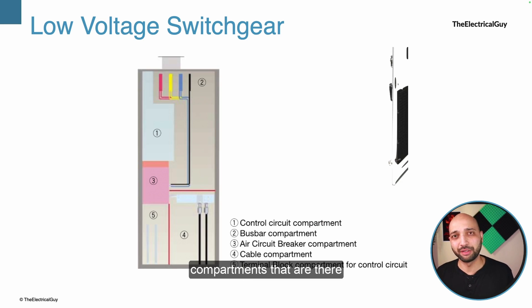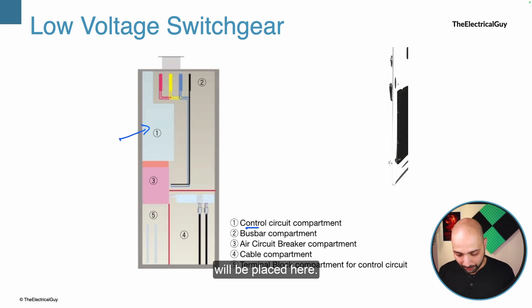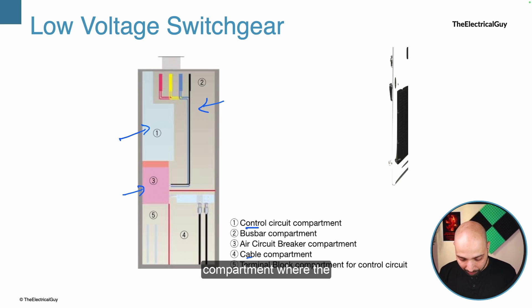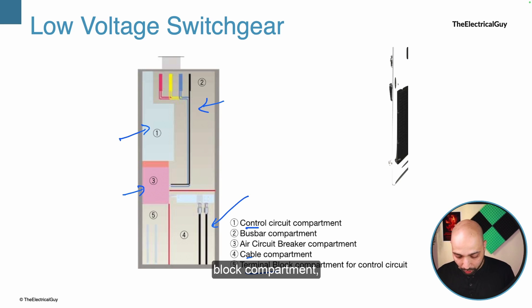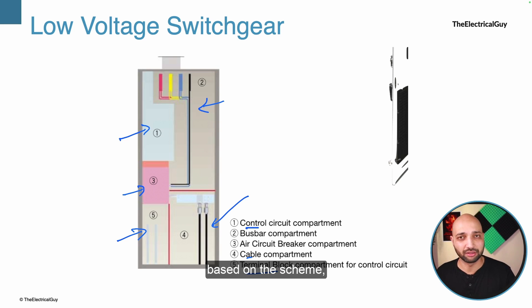The general compartments in a low voltage switchgear panel are: the control circuitry compartment containing switches, MCBs, contactors, and relays; the bus bar compartment where cables enter and the bus bar runs through all panels; the air circuit breaker compartment where the circuit breakers are placed; the cable compartment where incoming cables — say from a transformer — enter; and the terminal block compartment for remote indications via wiring. This is a general overview and the arrangement may vary based on the scheme and the manufacturer.